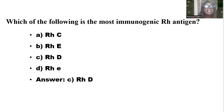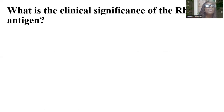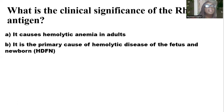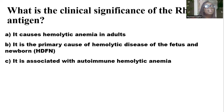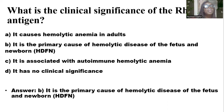What is the clinical significance of the RHD antigen? Options include: it causes hemolytic anemia in adults; it is the primary cause of hemolytic disease of the fetus and the newborn; it is associated with autoimmune hemolytic anemia; it has no clinical significance. And the answer is B — it is the primary cause of hemolytic disease of the fetus and the newborn.